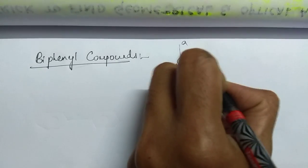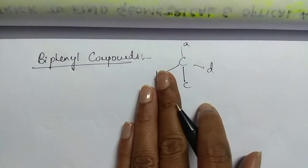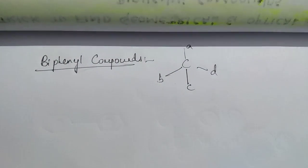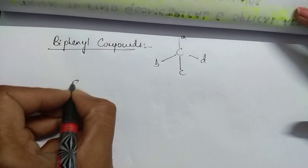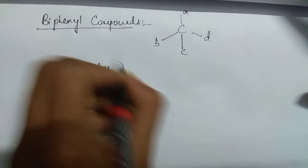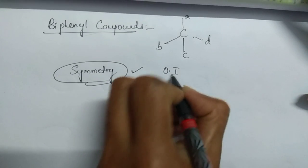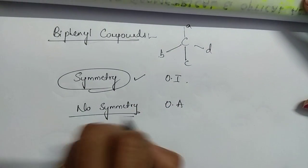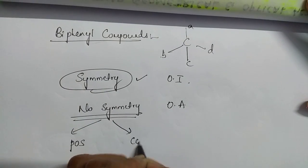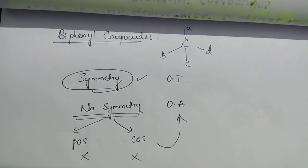Now I am going to teach you about optical activity in biphenyl compounds. Actually, in a biphenyl compound there is no chiral center — no carbon surrounded by four different groups — because all are SP2 hybridized carbons. But to find if optical activity is present, you need to check the symmetry. If symmetry exists, it is optically inactive. If there is no plane of symmetry and no center of symmetry — both should be absent — then the compound is optically active.